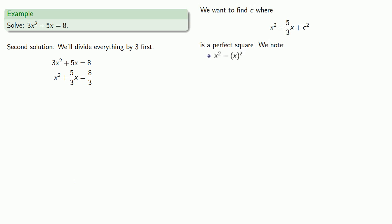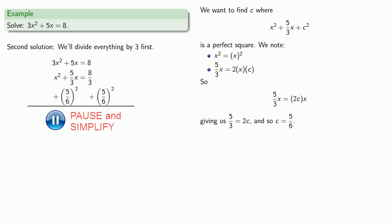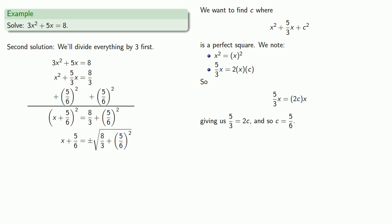Once again, x squared is x squared. We want 5 thirds x to be 2 times x times c, so 5 thirds x equals 2cx, giving us c equals 5 sixths. Adding 5 sixths squared to both sides, the left hand side is the square of x plus 5 sixths. The right hand side is an arithmetic expression. Taking the square root of both sides, x plus 5 sixths equals plus or minus the principal square root of 8 thirds plus 5 sixths squared. We solve for x by subtracting 5 sixths.